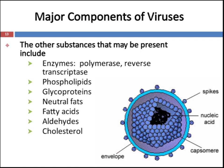Other major components of virus beyond those discussed in morphology include some enzymes like polymerase and reverse transcriptase, as well as phospholipids, glycoproteins, neutral fats, fatty acids, aldehydes, and cholesterols.